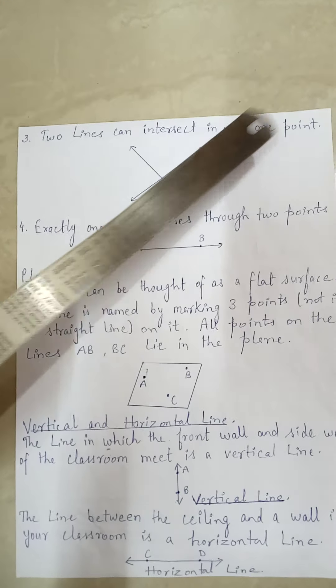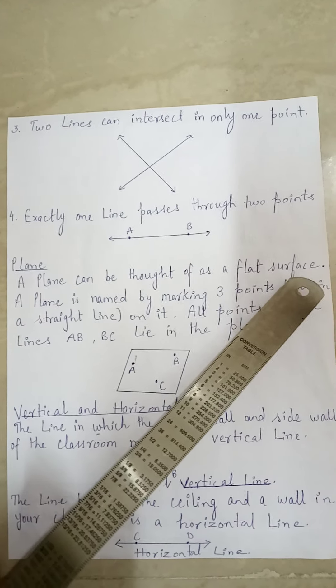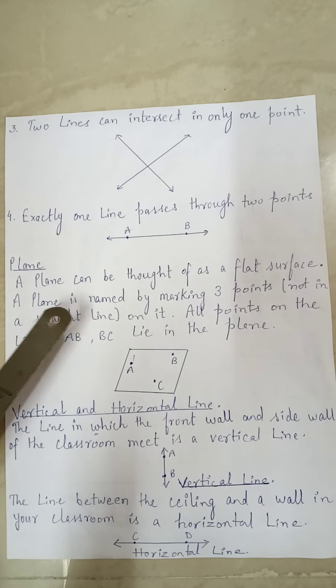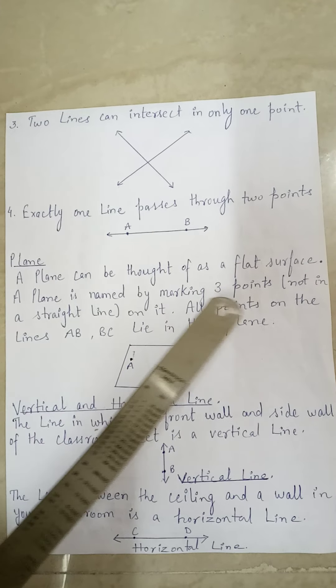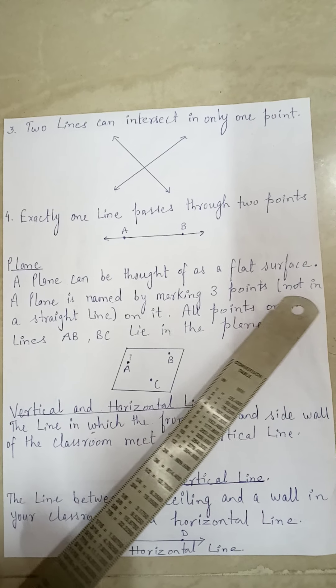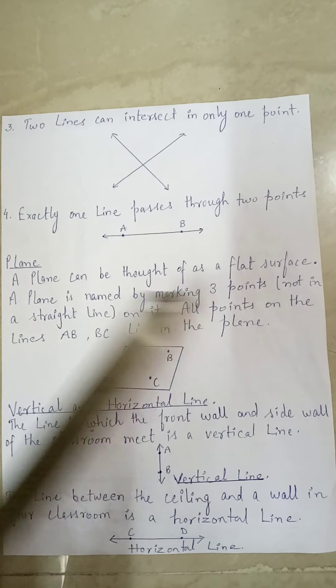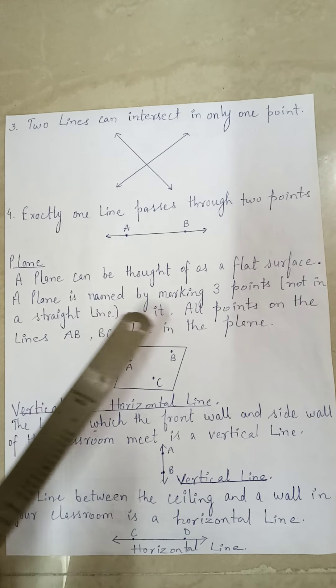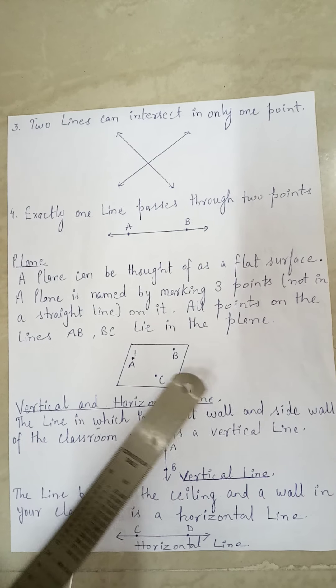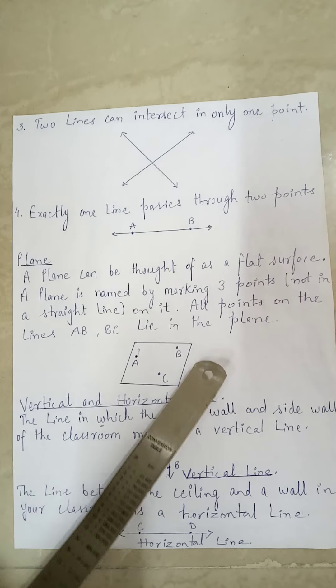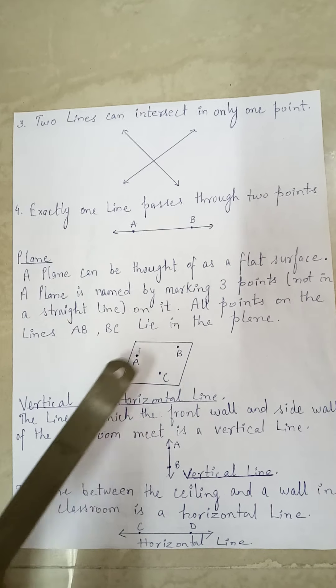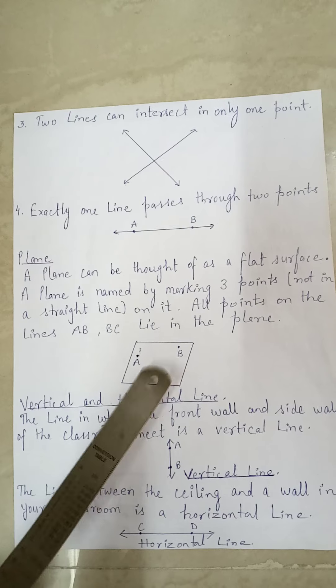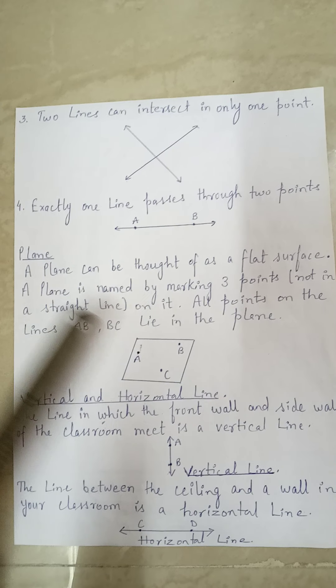The next heading is Plane. A plane can be thought of as a flat surface. A plane is named by marking three points that are not in a straight line on it. All points on lines AB and BC lie in the plane. Here you can see that all three points are not lying on the same line — that flat surface is called a plane.